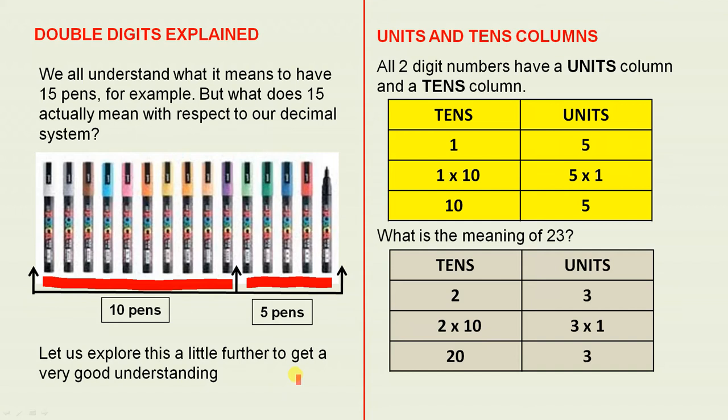Let us explore this a little further to get a very good understanding. Now here, remember we have 15 pens. All two-digit numbers have a units column and a tens column. So when we write the number 15, 1 5, we normally write it this way, don't we? That's what we normally write. But this is what it means.